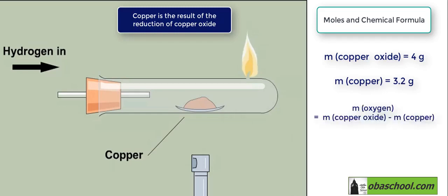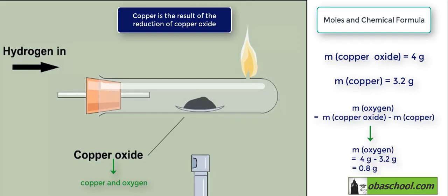The difference in mass between the copper oxide and the copper tells us how much oxygen was in the original compound, because copper oxide is made up of copper and oxygen. So the mass of oxygen is 4 minus 3.2, which is equal to 0.8 grams.